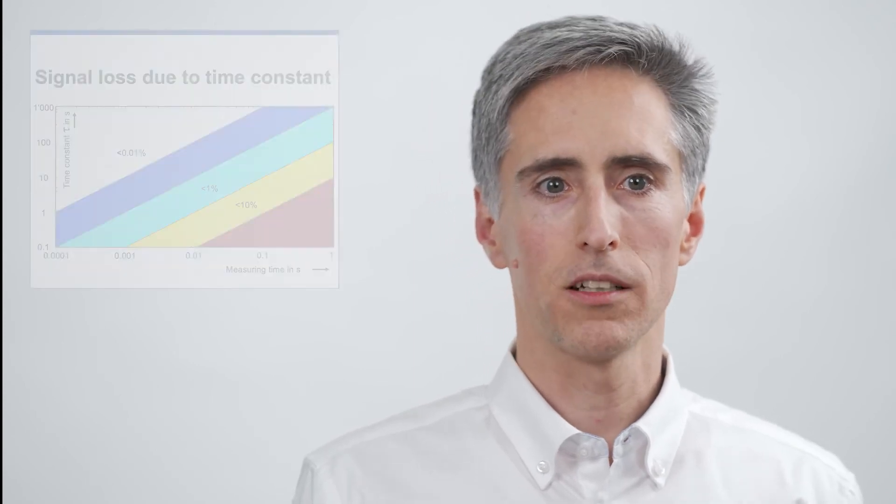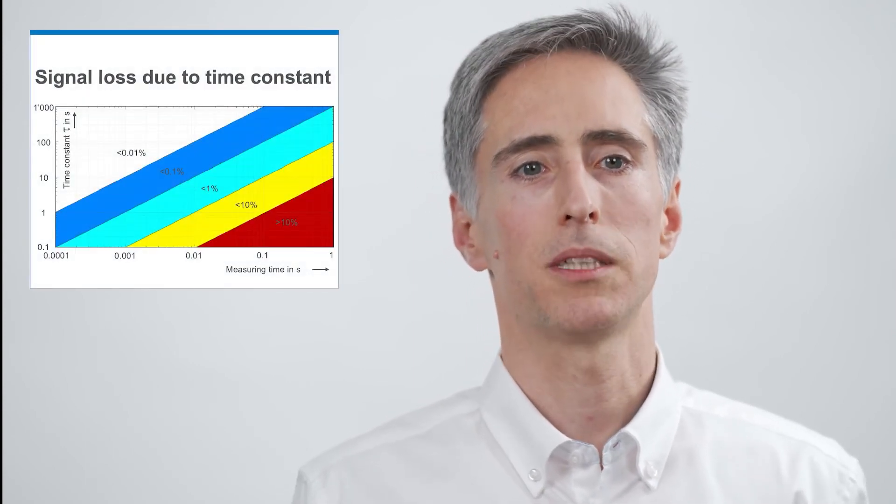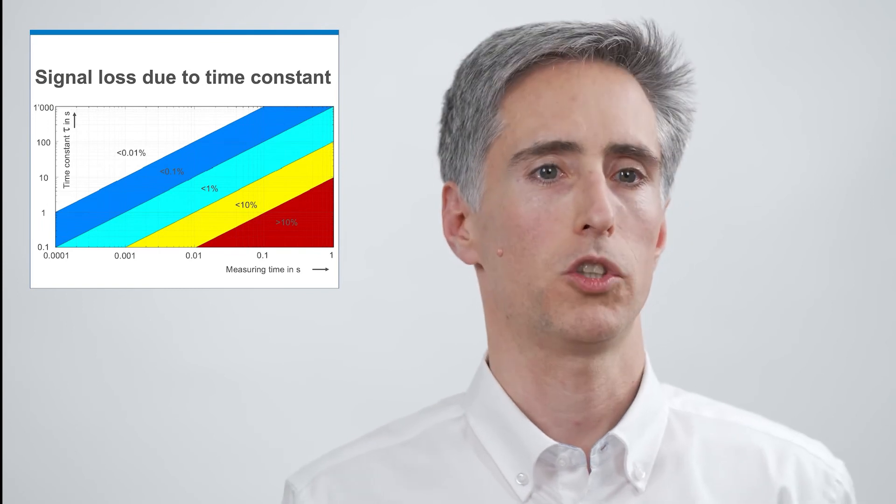The longer the time, the bigger the loss. When I want to stay below 1% signal loss, my time constant should be 100 times bigger than the sequence I want to measure.